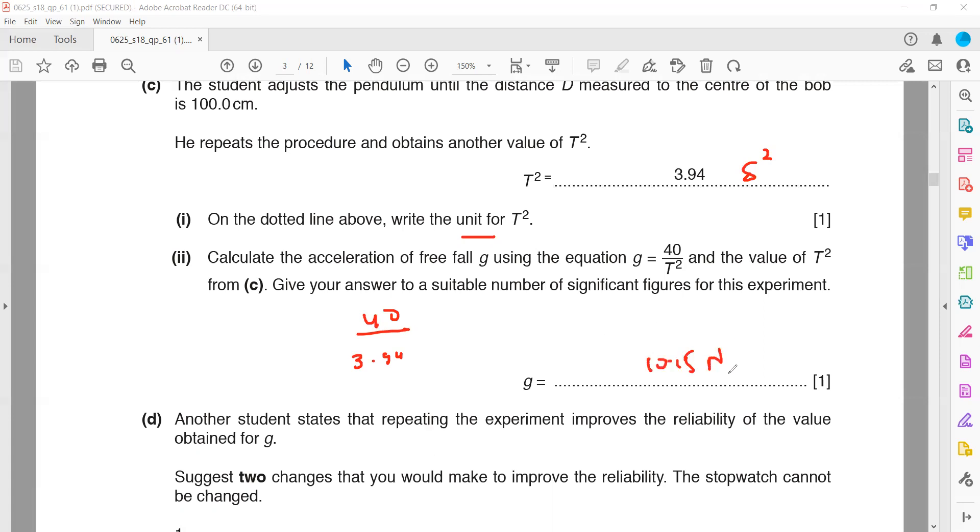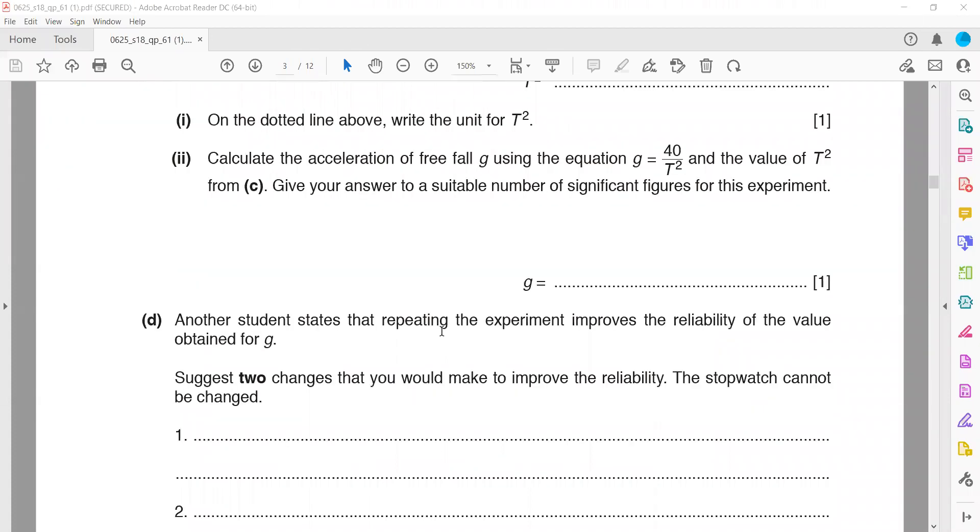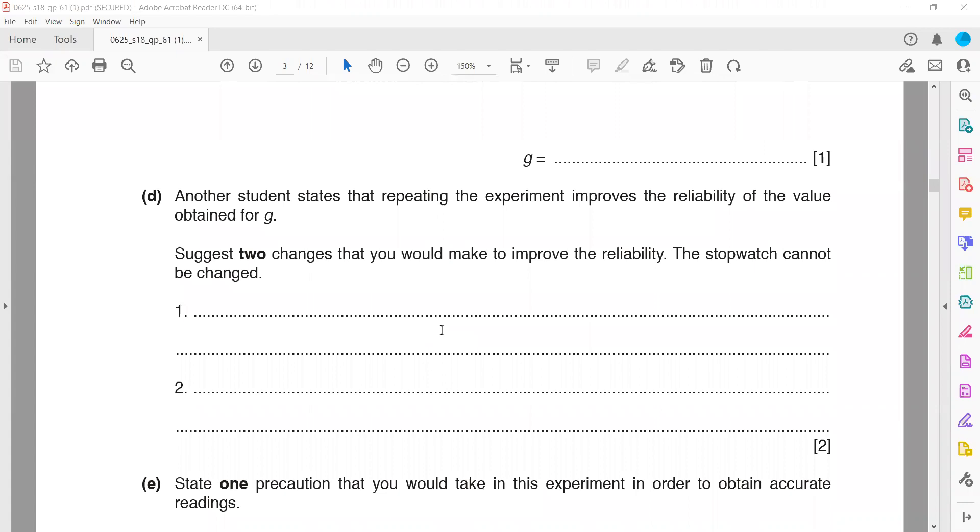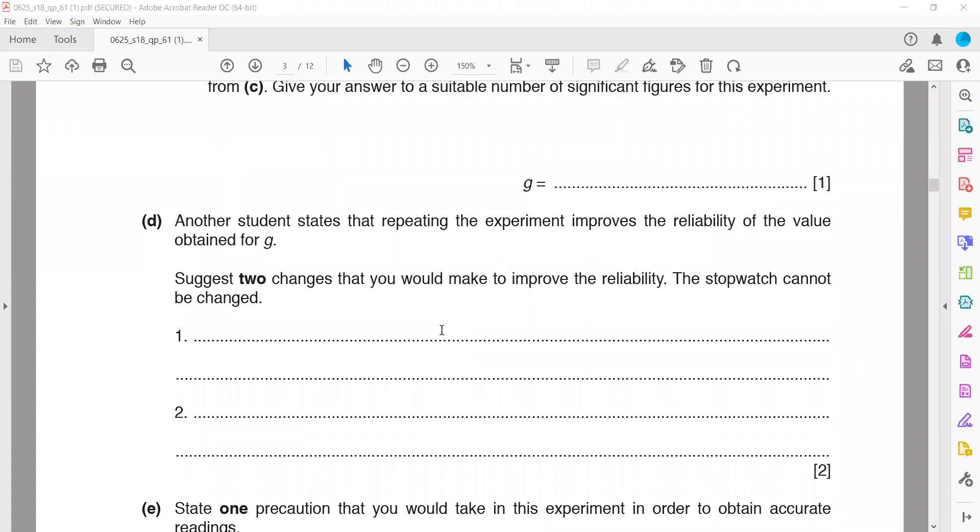Another student states that repeating the experiment will improve the reliability of the obtained value of g. State two changes that would make to improve the reliability. The stopwatch cannot be changed. Basically, how can we repeat the experiment?